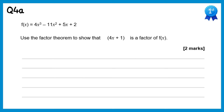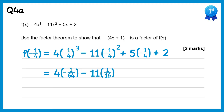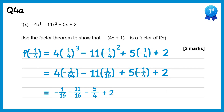For part a of this question we need to show that 4x plus 1 is a factor. To do this we'll do f of negative one quarter. That will be 4 lots of negative one quarter cubed, take away 11 lots of negative one quarter squared, plus 5 lots of negative one quarter, plus 2. Negative one quarter cubed is negative 1 over 64, so we've got 4 lots of negative 1 over 64. Negative one quarter squared is positive 1 over 16, so it's take away 11 lots of 1 sixteenth. Then plus 5 lots of negative one quarter, plus 2. 4 lots of negative 1 over 64 gives negative 4 over 64 which simplifies to negative one sixteenth. Then we have negative 11 over 16, take away 5 over 4, plus 2. Writing all of these over 16: negative 5 over 4 becomes negative 20 over 16, and plus 2 becomes 32 over 16. It's clear that this equals 0, therefore 4x plus 1 is a factor.